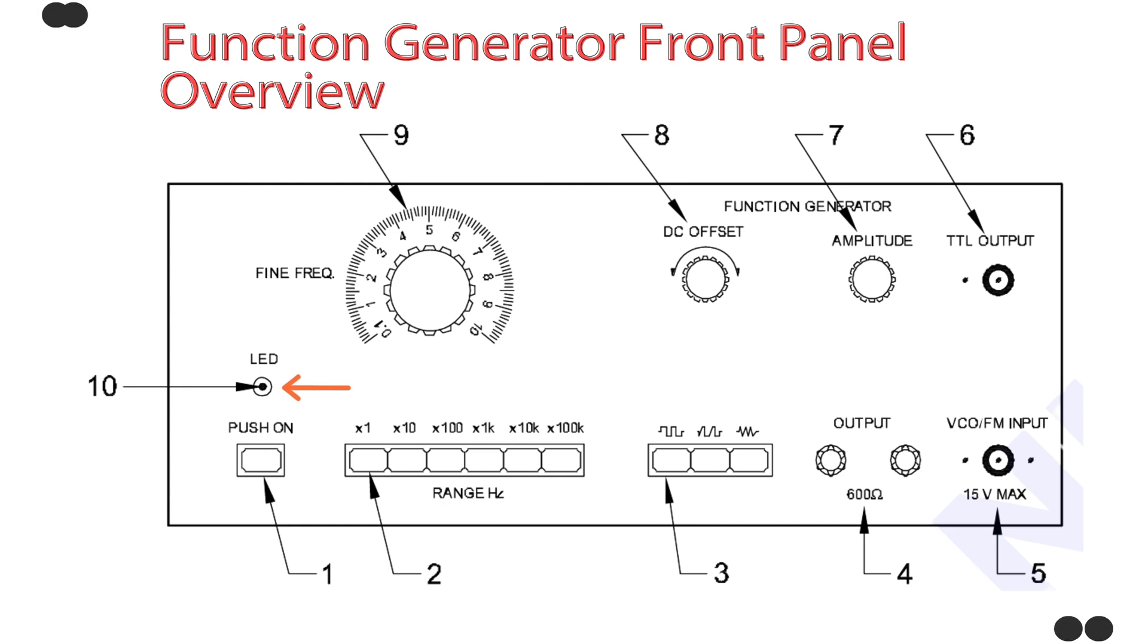Number ten. Power indicator LED. Purpose: Shows when the function generator is powered on. Color: Usually red or green. Location: Next to the power button.